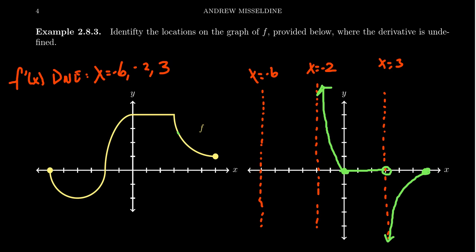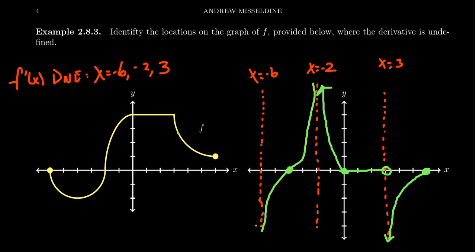At x equals negative 4, there's a horizontal tangent line, which means that's going to be an x-intercept of the derivative. If you're a little bit to the left of negative 2, that's going to be a positive tangent, so we should be close to positive infinity there. On the other hand, if you are a little bit to the right of negative 6, that's going to be a negative slope. Putting those together and connecting in a smooth way, we get a picture that kind of looks like a tangent curve.